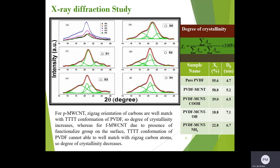The XRD analysis suggests that the degree of crystallinity reduces for functionalized MWCNT-PVDF than pure MWCNT-PVDF because for functionalized MWCNT, due to the presence of functional groups on the surface, TTTT conformation of PVDF cannot be able to well match with the zigzag carbon atoms, so degree of crystallinity decreases.